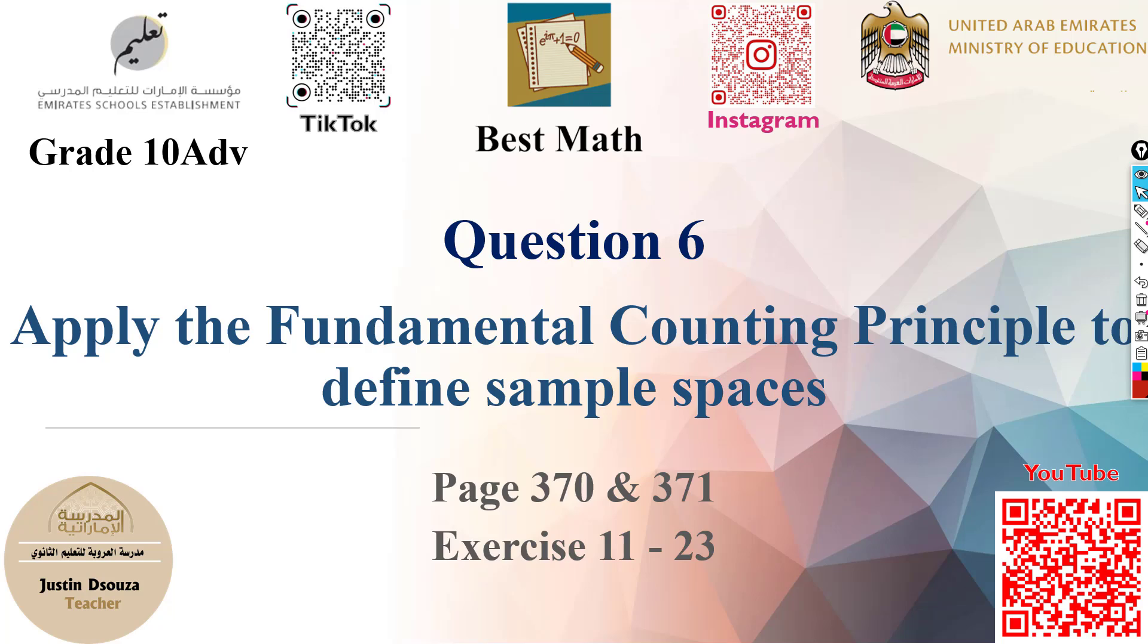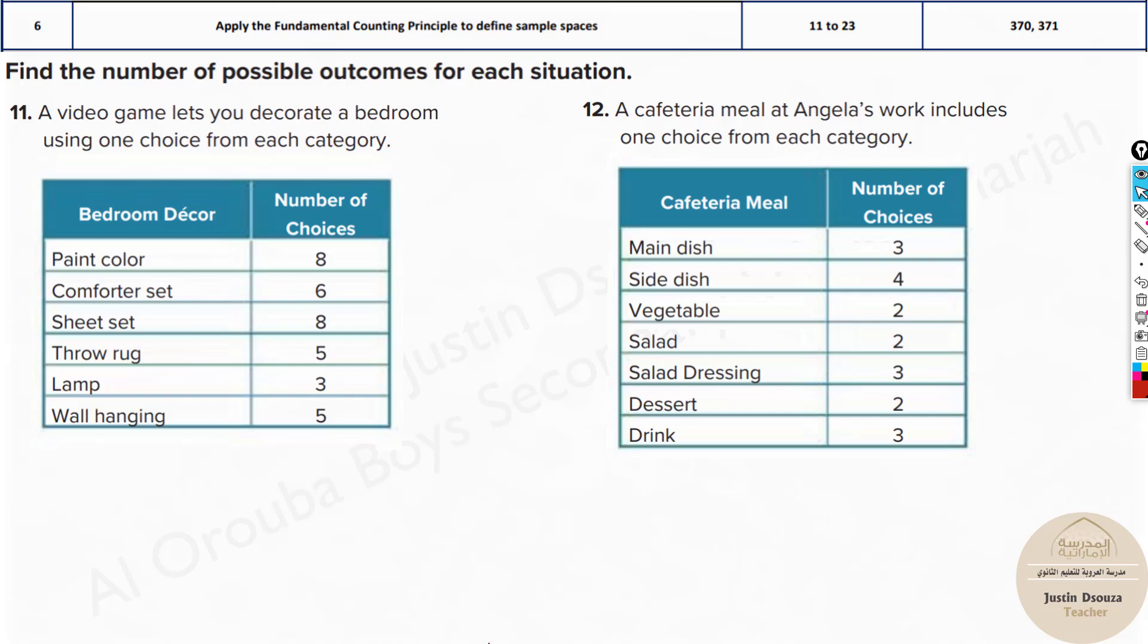Let us learn about the fundamental counting principle. Fundamental counting principle helps us know the sample space or total possibilities of a certain condition. Here we have a video game which lets you decorate a bedroom. There are six categories and each category has different number of choices. What are the total possible choices that you can make? Like one different type of paint color, one different type of comforter set, and everything uniquely - how many different bedrooms can you decorate?